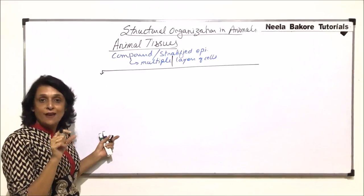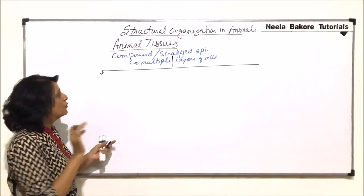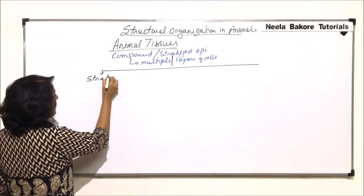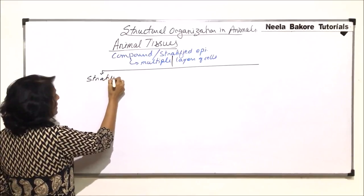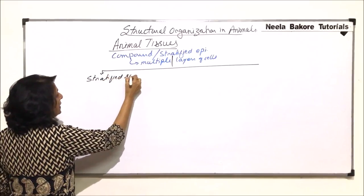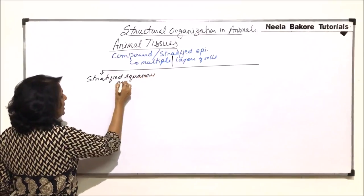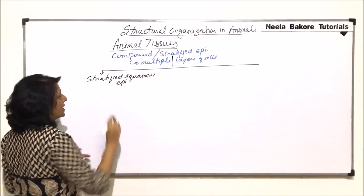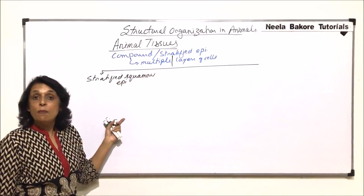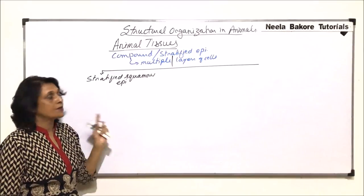So if the cells are flat, then we would call it squamous — but we will call it stratified squamous epithelium. The cells are going to be flat, but they are in multiple layers.